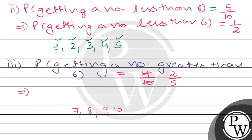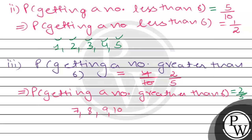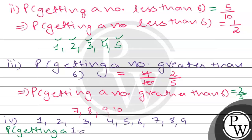The probability of getting a number greater than 6: numbers greater than 6 are 7, 8, 9 — that is 3 favorable cases. So the probability of getting a number greater than 6 is 3 divided by 10.